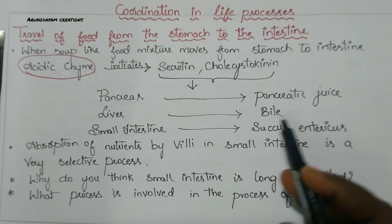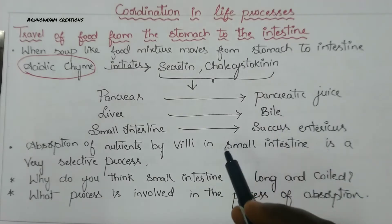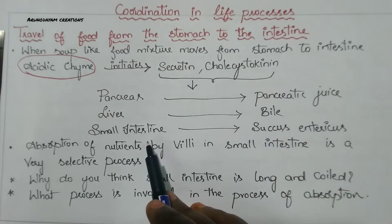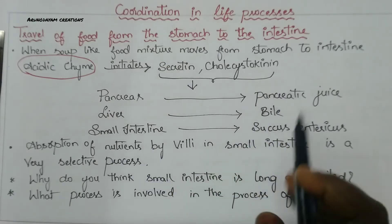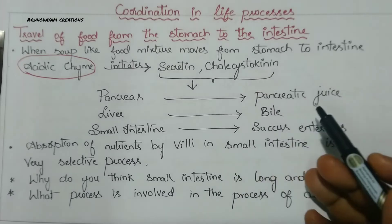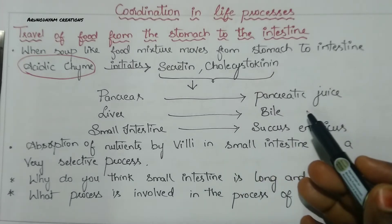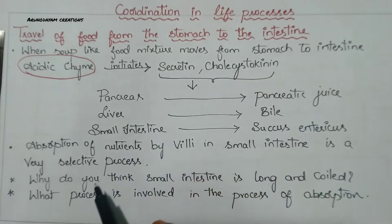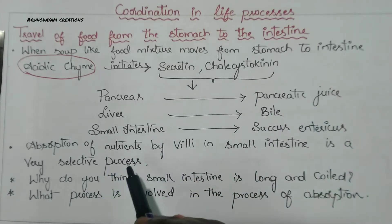So how do these juices help digest food? Finally, in the small intestine, the food is completely digested with the help of these juices - pancreatic juice, bile, and succus entericus - through the enzymes present in these juices. For the small intestine, the food is completely digested.